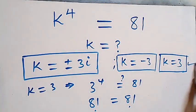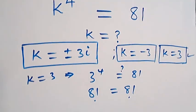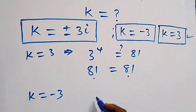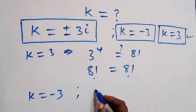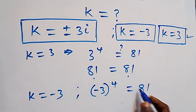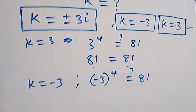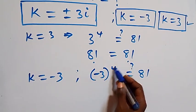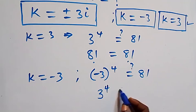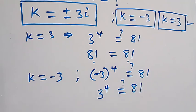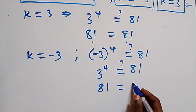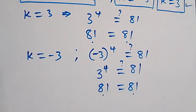For k equals minus 3, we have minus 3 raised to power 4 equals 81. When we raise a negative number to an even power, it becomes positive, so this is the same as 3 raised to power 4 equals 81, which equals 81. Left hand side equals right hand side, so k equals minus 3 also satisfies the given problem.